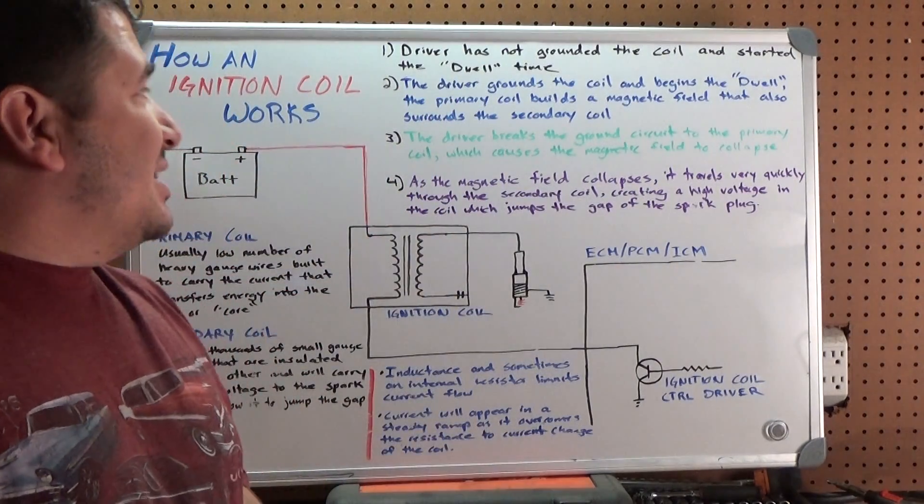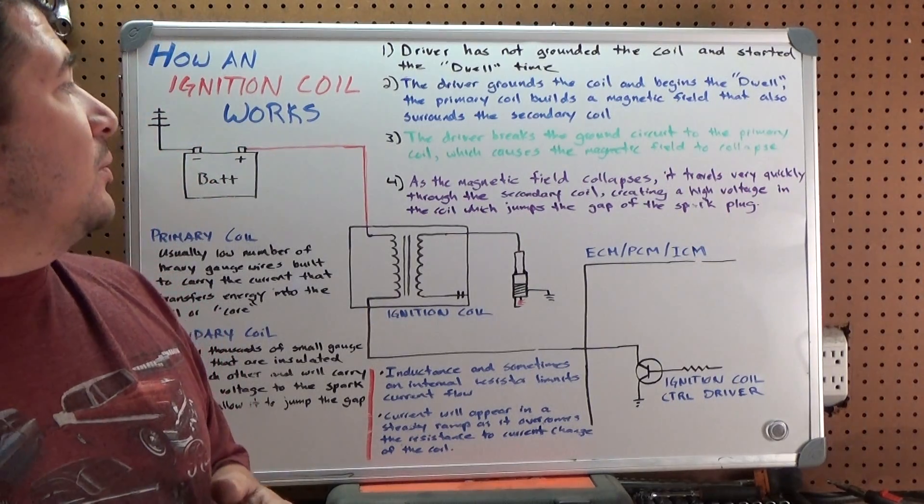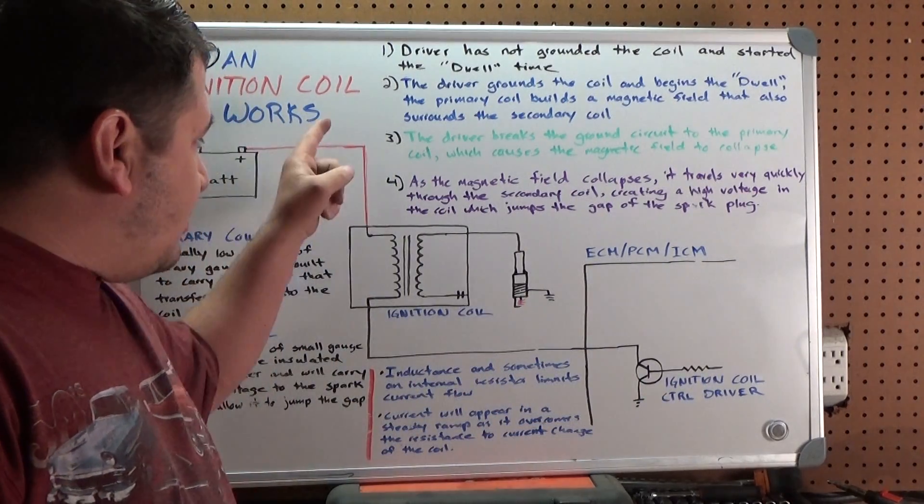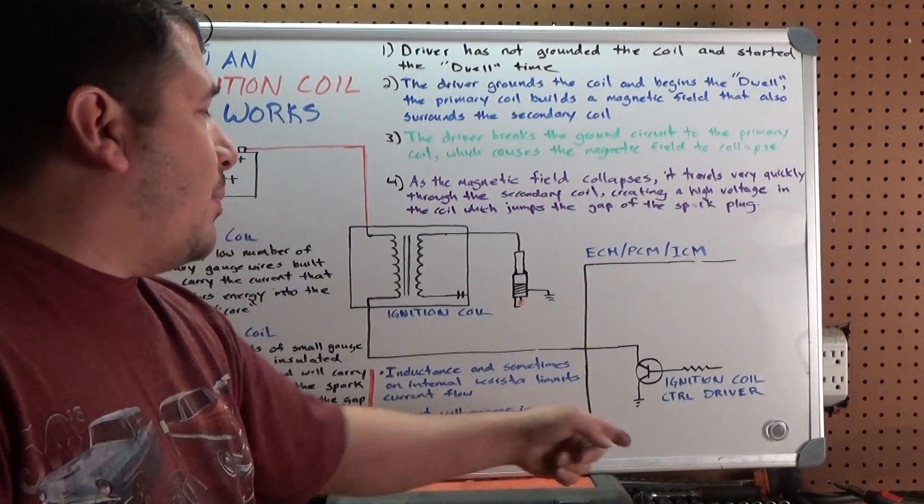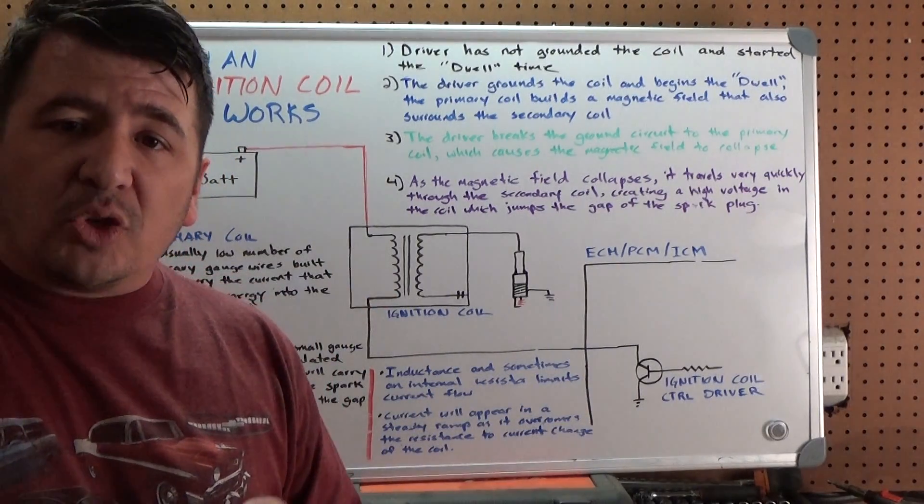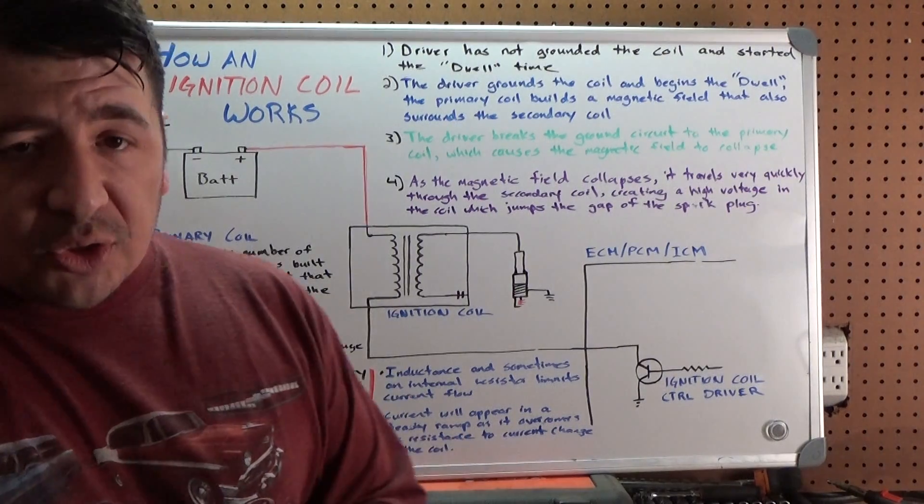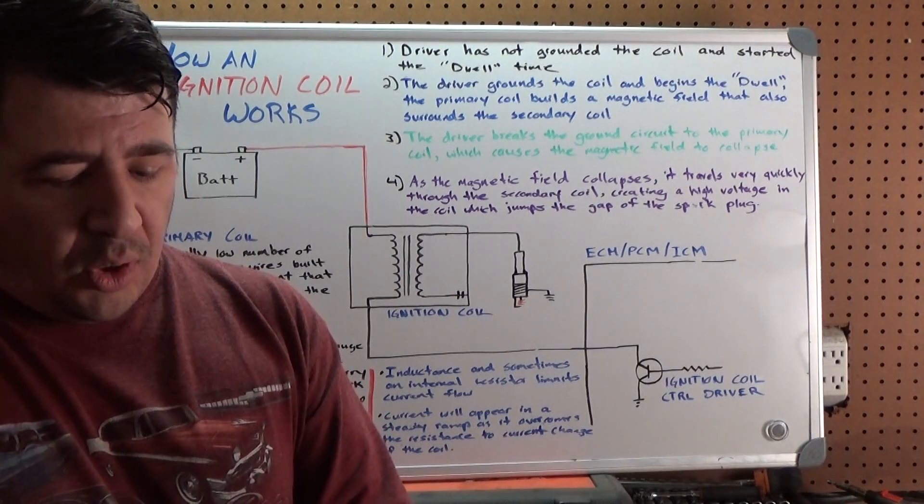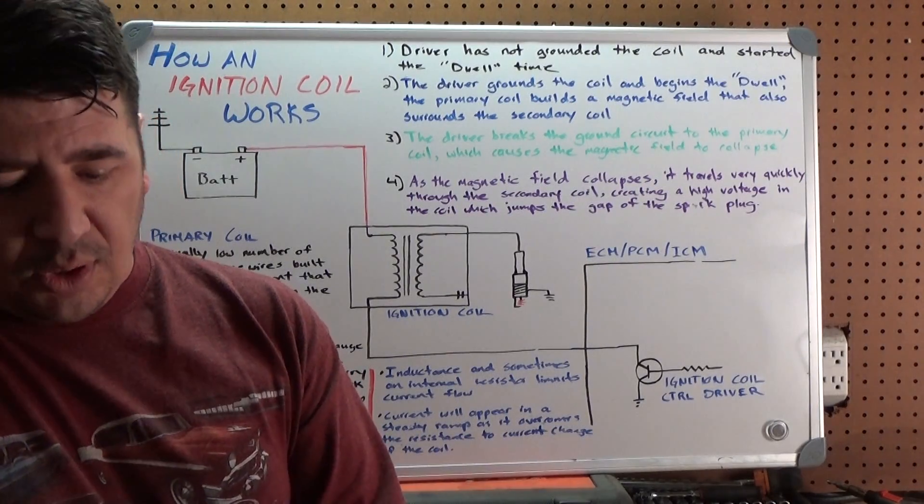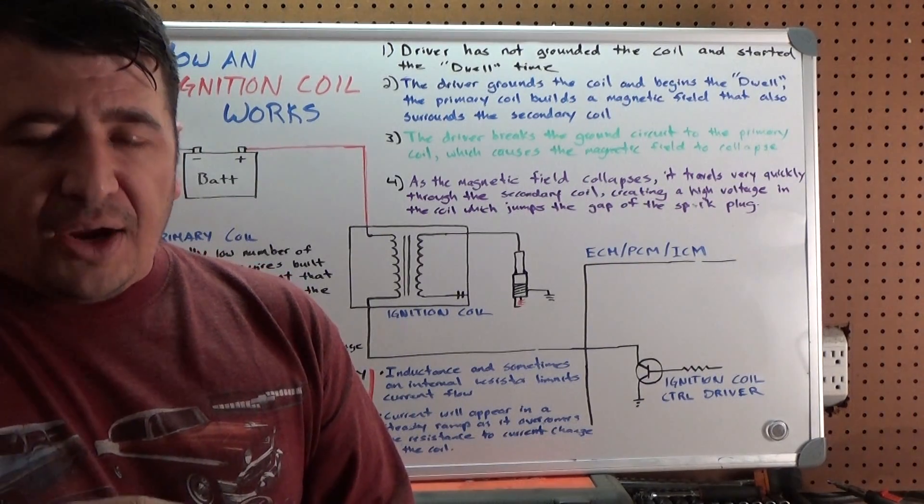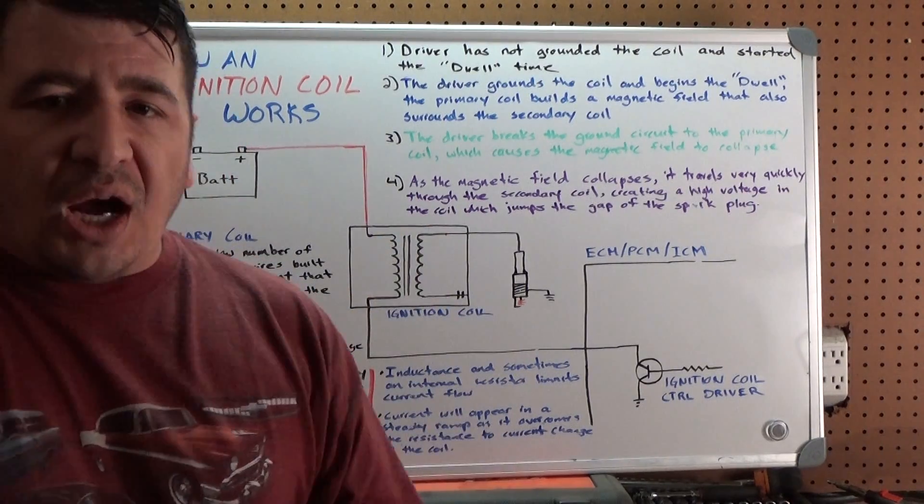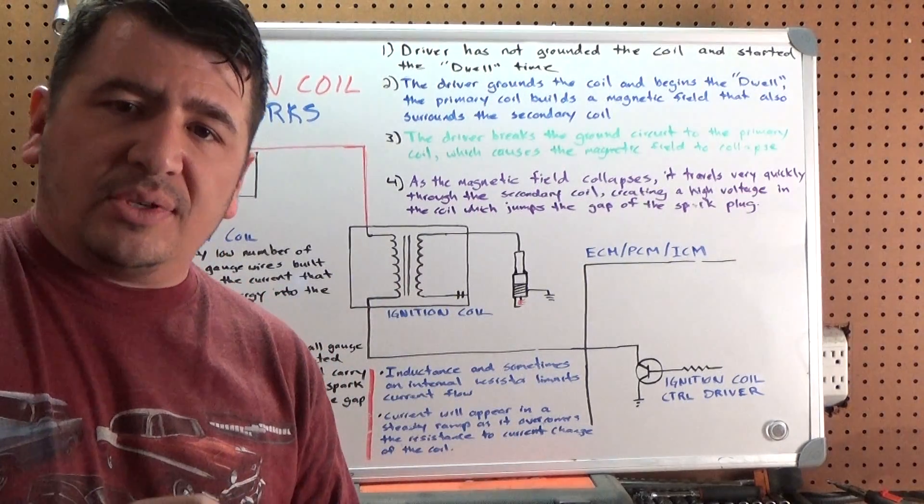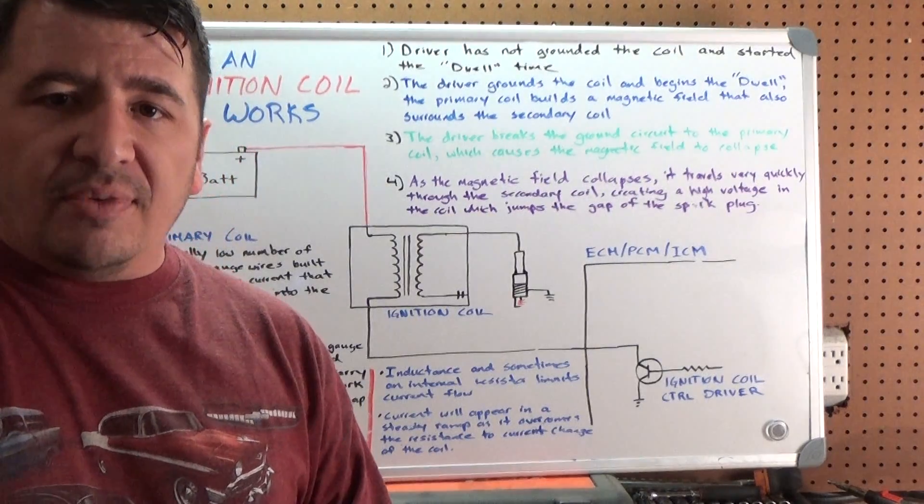Our next step: the driver grounds the coil and begins the dwell, and the primary coil builds a magnetic field that also surrounds the secondary coil. This switch turns on, now we have a power source to a coil and a ground path. So this coil is now energized, and it's going to start to build a magnetic field. That magnetic field is going to also encompass the secondary coil because it's usually a sleeve with the primary coil, and then right inside that sleeve is another sleeve of coil that's the secondary coil, and in the middle of those, you've got the iron core that is there to help concentrate the magnetic field as it builds.